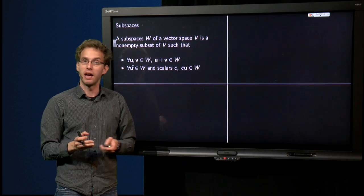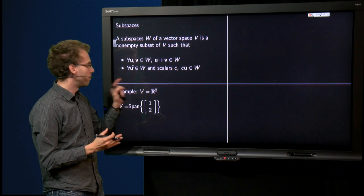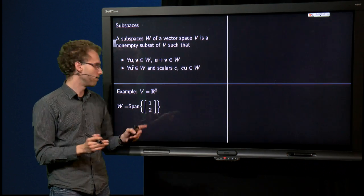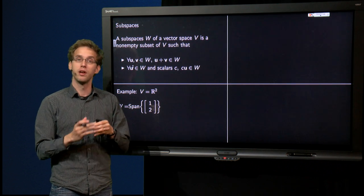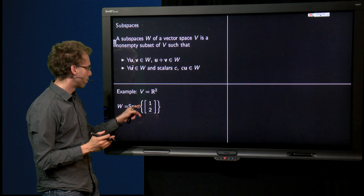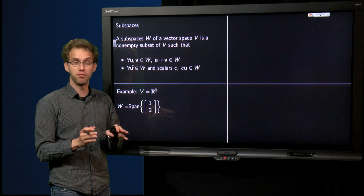Well, let's look at some examples. We have of course our familiar example V is R², and we know that spans are subspaces, so for example the span of (1, 2) will be a subspace of R². All linear combinations of vector (1, 2). That is something we saw already in linear algebra 1 before.